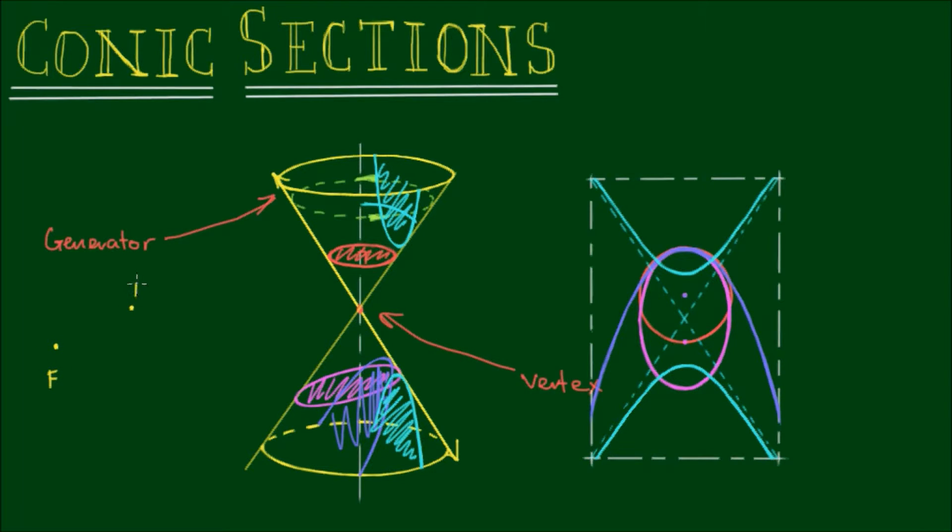a moving point P that follows the locus, and a straight line called the directrix. So here is the directrix, and we have F for focus.